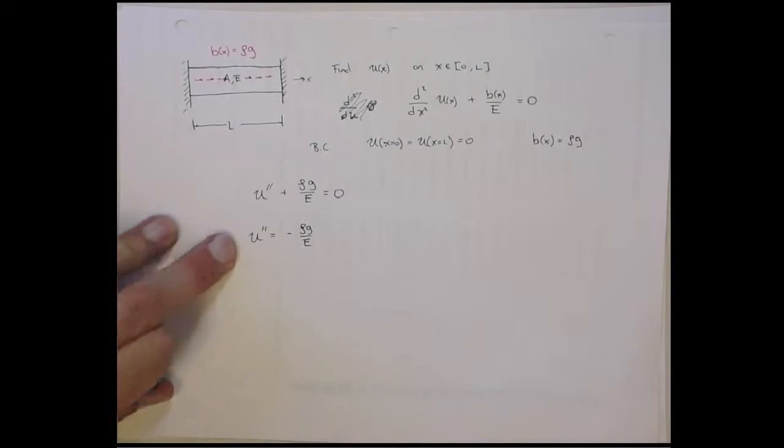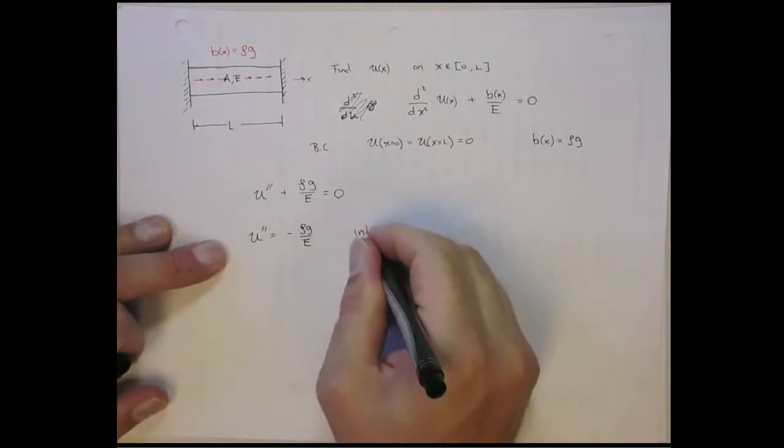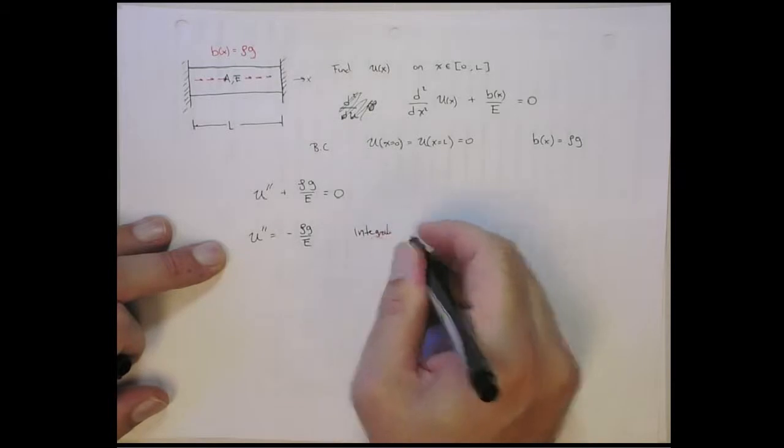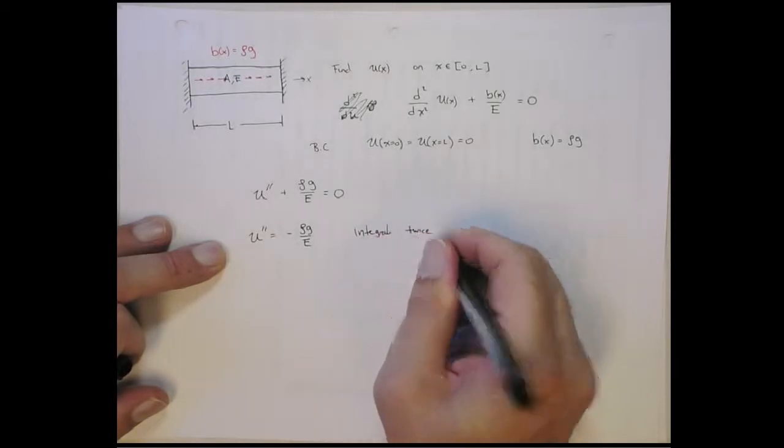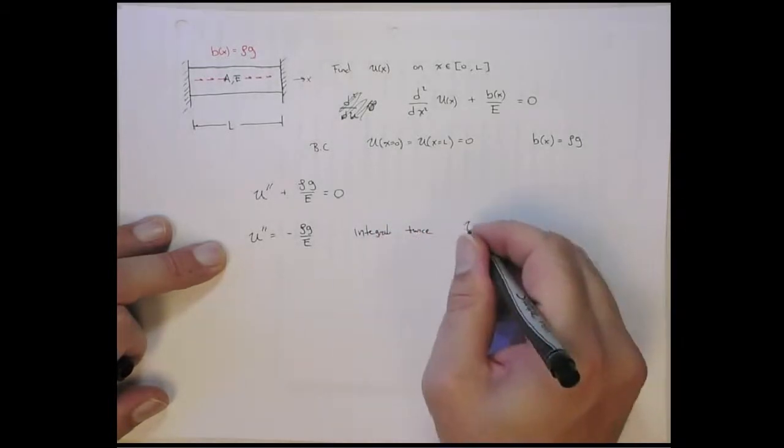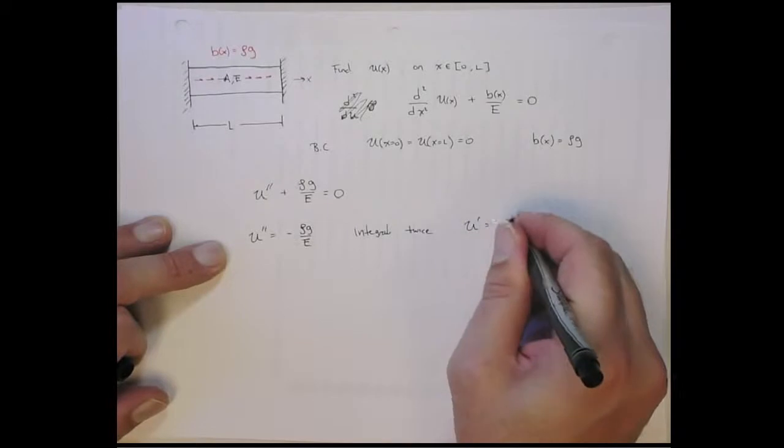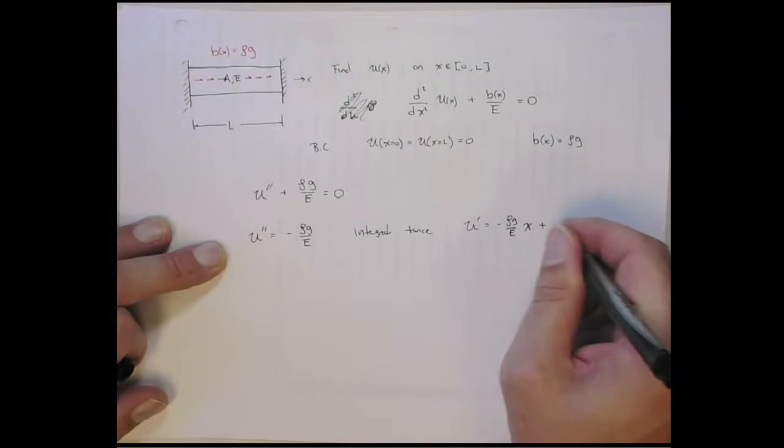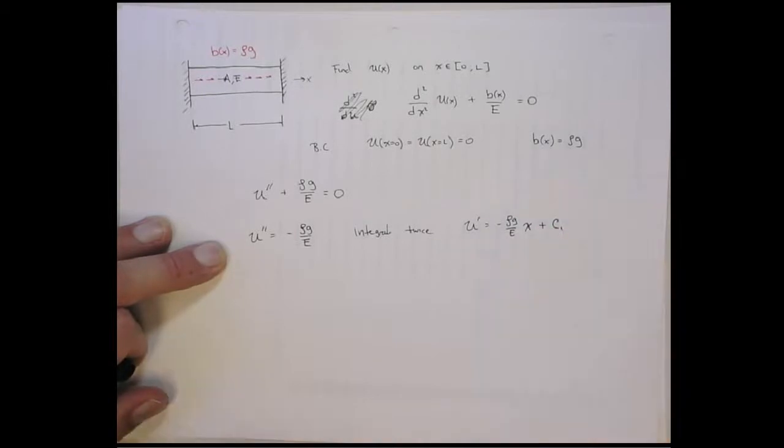This is a pretty easy one to look at. You can look at this and you can see that it has polynomial solutions. You can actually just integrate this twice. So if you integrate it once, you get the first derivative is minus ρg over E times x, plus some constant of integration c1.